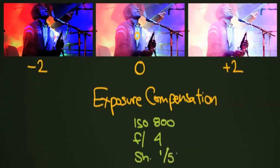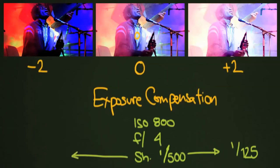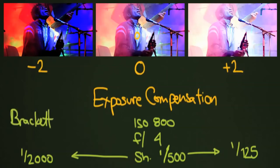Say my shutter speed was at 1/500 — that's probably a little high but just as an example. To overexpose by two stops, I'd move two stops down from 1/500: half of 500 is 250, and half of that is 1/125. To underexpose by two stops I'd go the other direction: 500 times 2 is 1,000, times 2 is 2,000 — so a photo at 1/2000 of a second would look something like that darker image. That is a form of bracketing.